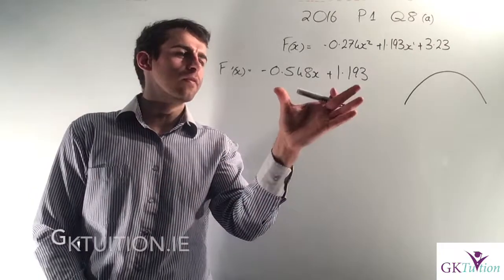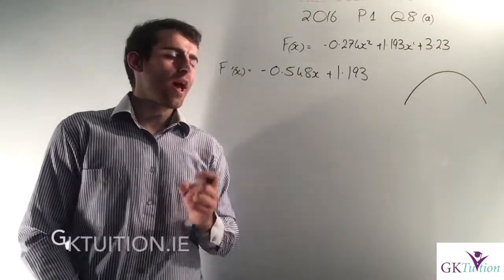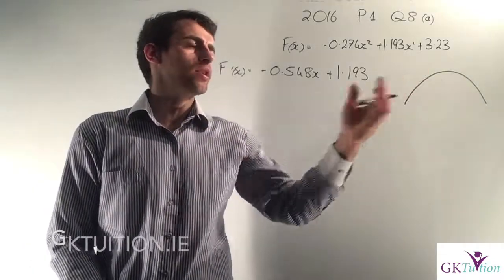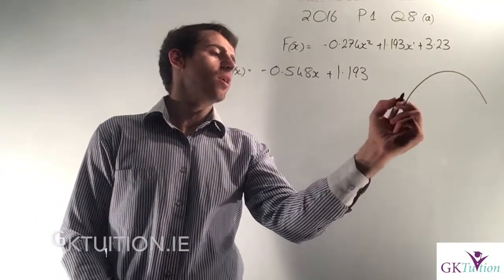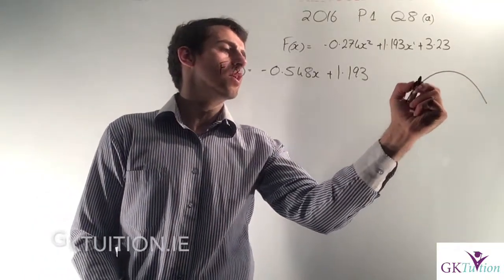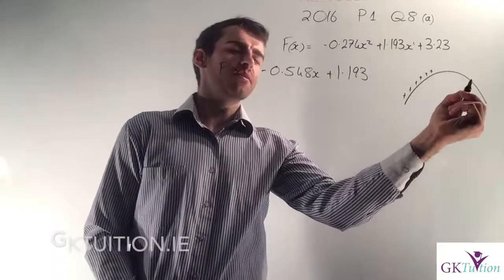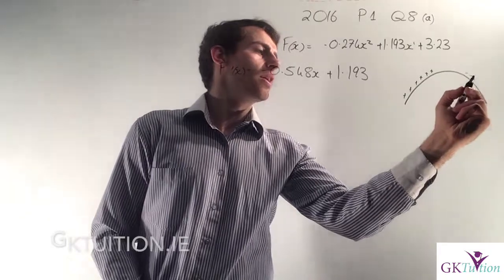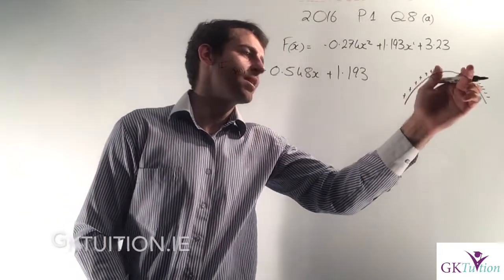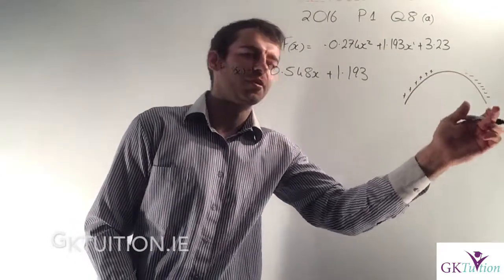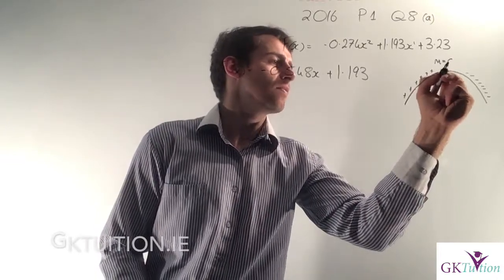The reason we've got the first derivative is because it represents the slope, and I can use the slope to identify the turning point on the graph. As the graph increases the slope is positive, and after the maximum point the slope is negative. So if it's positive up to this point and negative after, that means at the turning point the slope of the graph must be 0.